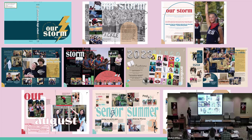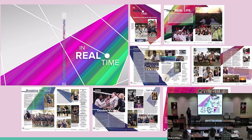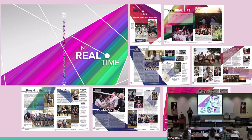Visual variety is important to have on your spreads. This entry included a people page, opening copy, a title page, sports, academics, and an event. If you have a traditional themed book with five or six sections, you can include something from each section. If you're more of an umbrella or chronological book, make sure you include a little bit of both.